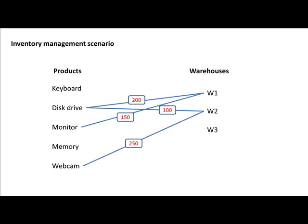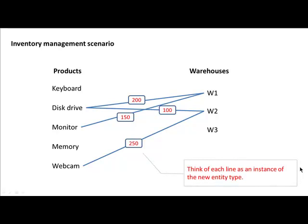So this is a very important lesson. We are looking at the inventory management scenario that we had, and we are now saying that this is not just a relationship, but it is an entity type in itself, and its attribute is quantity. We are going to have a new entity type whose attribute is quantity. Each of these lines can be thought of as an instance of the new entity type that we are going to create.